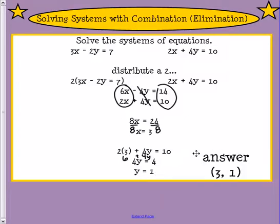So our answer would be 3 for x, y equals 1. So 3 comma 1. We can check our work. We can plug in both of our numbers into the equations just to make sure that we did it right.